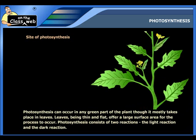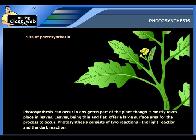Photosynthesis can occur in any green part of the plant, though it mostly takes place in the leaves of the plant. These leaves, being thin and flat, offer a large surface area for the process to occur. Based on the structure of the leaf, photosynthesis comprises two reactions, namely the light reaction and dark reaction.